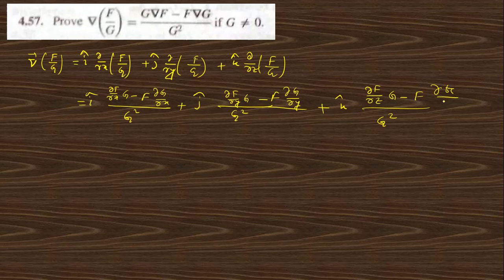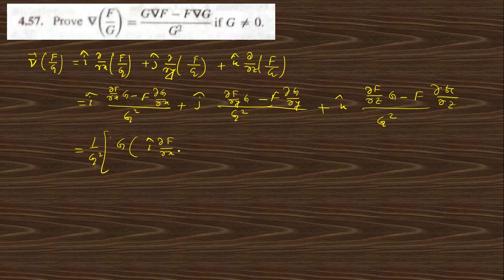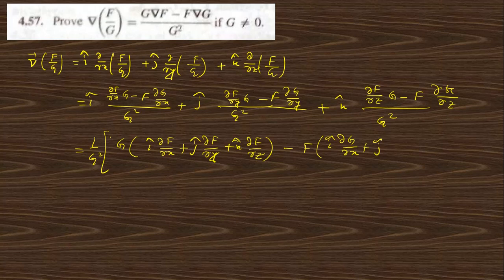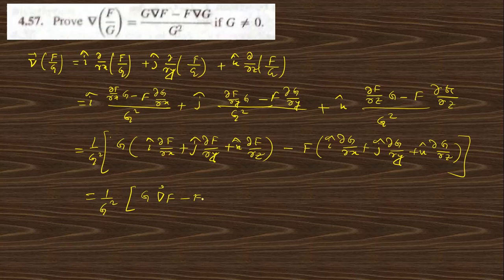Taking common factors, we collect the first group of terms as g·[i(∂f/∂x) + j(∂f/∂y) + k(∂f/∂z)] and the second group as f·[i(∂g/∂x) + j(∂g/∂y) + k(∂g/∂z)]. This gives (1/g²)[g·grad(f) − f·grad(g)], which proves the right-hand side.